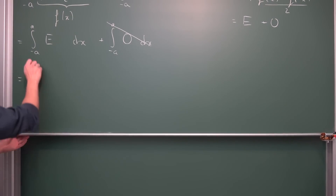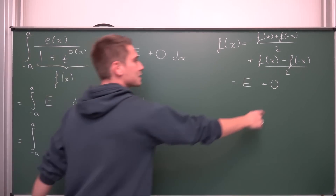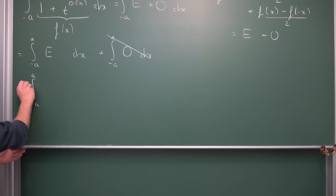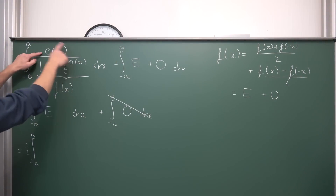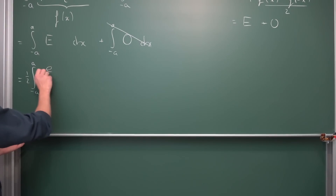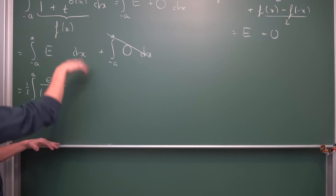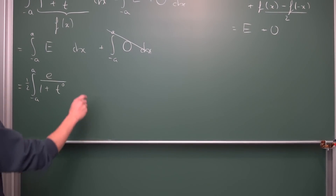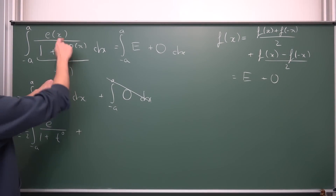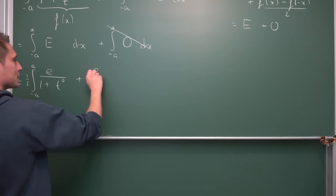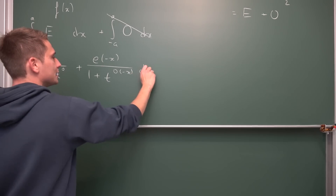If we were to write everything out, what is the even decomposition for our case? We are going to have a factor of one half brought to the outside. Then, since this is our even part, we take f of x: that's e of x divided by 1 plus t to the o of x power. And then we add f of negative x to it — that means we plug negative x into everything. This gives us e of negative x divided by 1 plus t to the o of negative x power, integrated with respect to x.